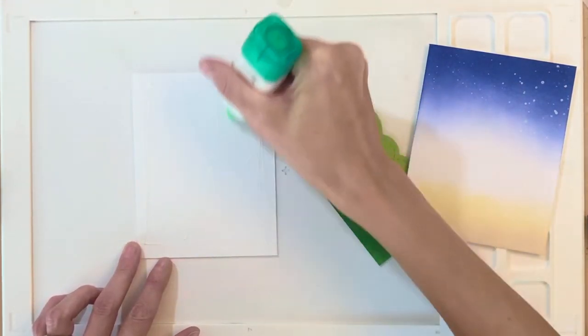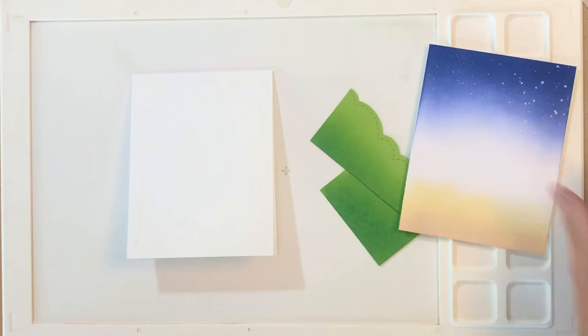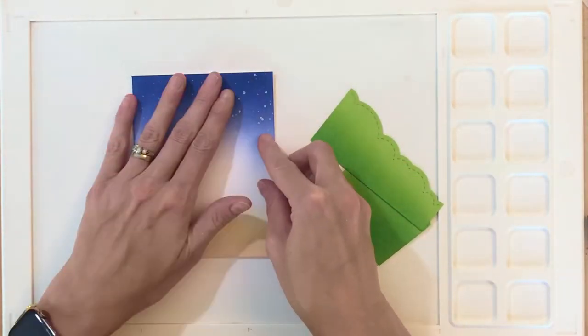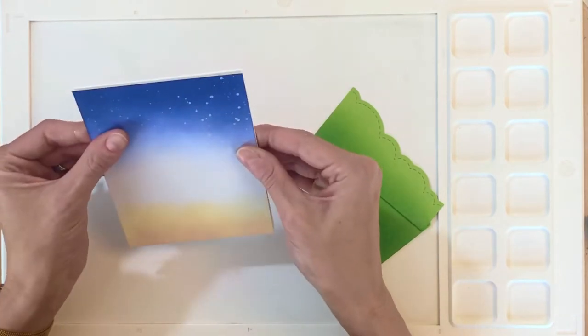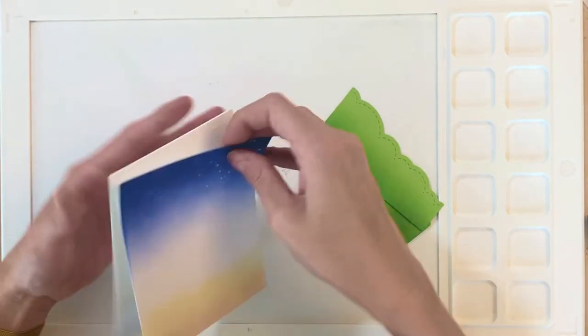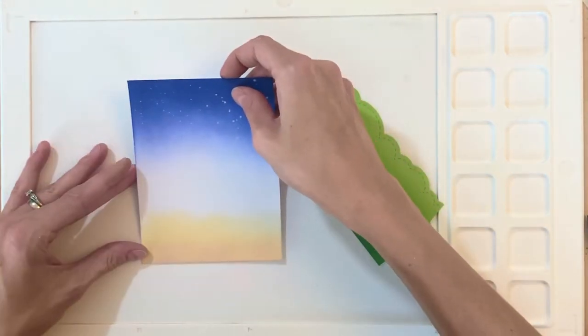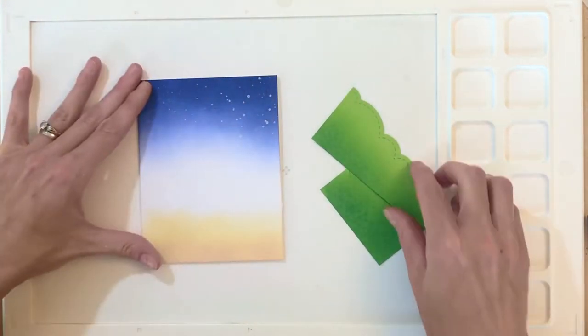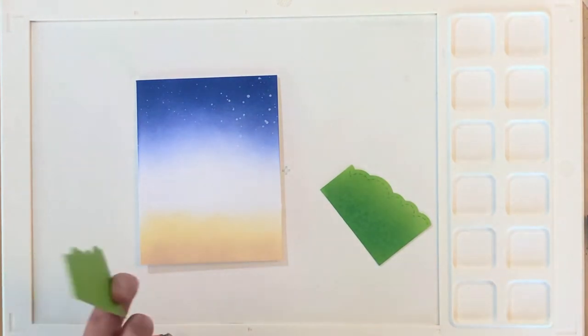Once that was die cut, I have all the components I need to assemble my card. The first thing I'm going to do is add some liquid glue to the front of an A2 top folding card base and then adhere my panel. The reason why I like to use liquid glue is it allows me to kind of quickly adjust before the glue sets and gives me a little bit of wiggle room to make sure that panel is perfectly straight.